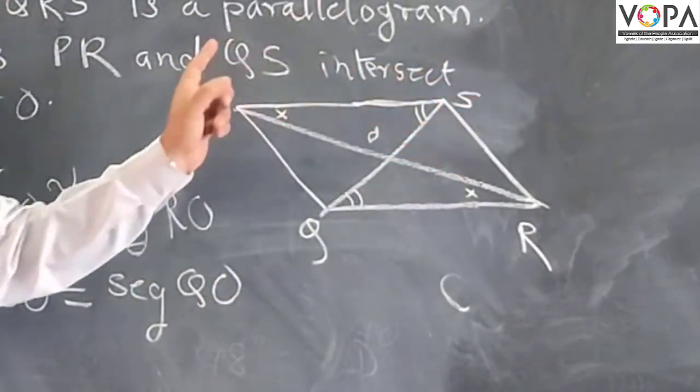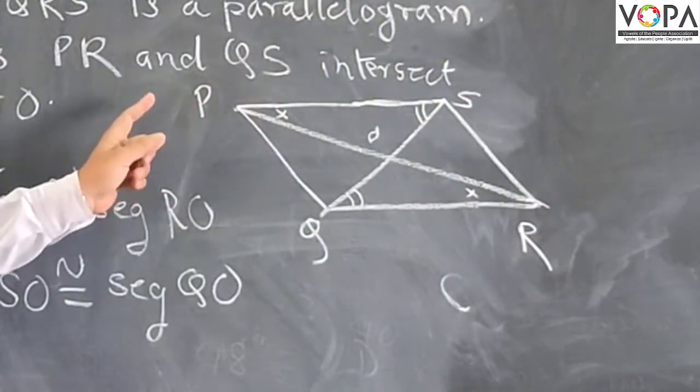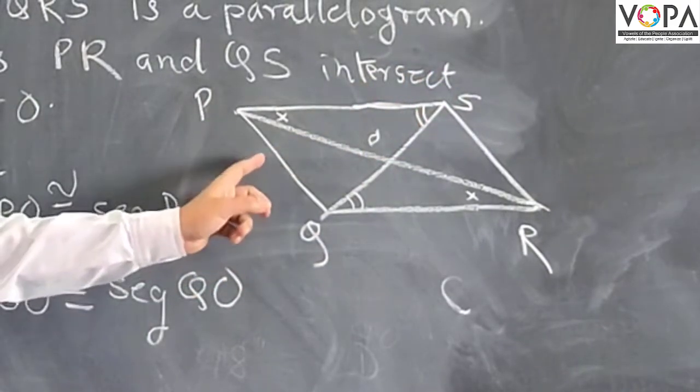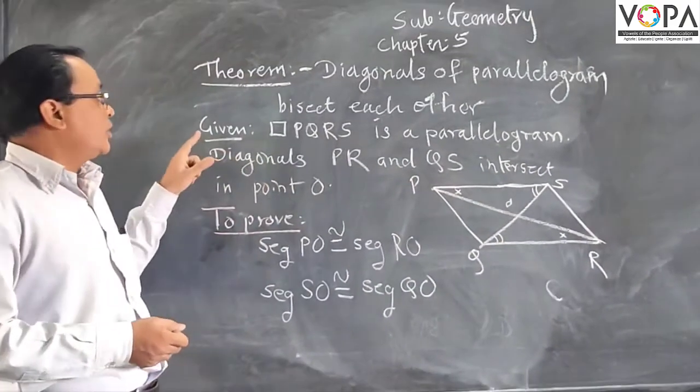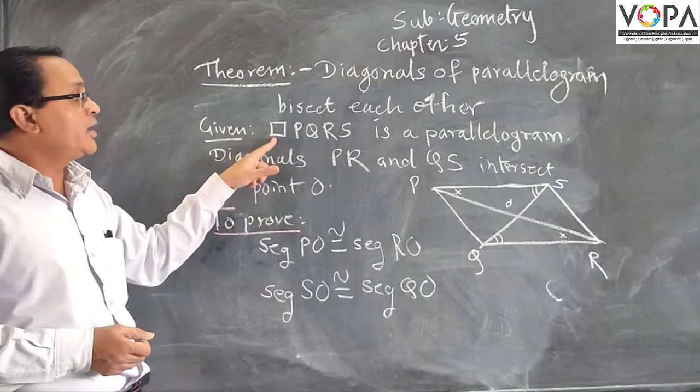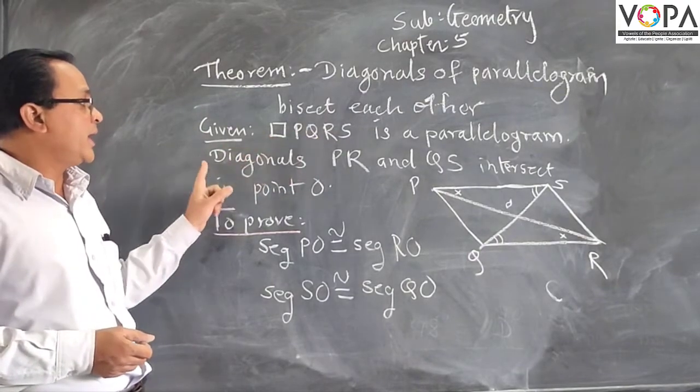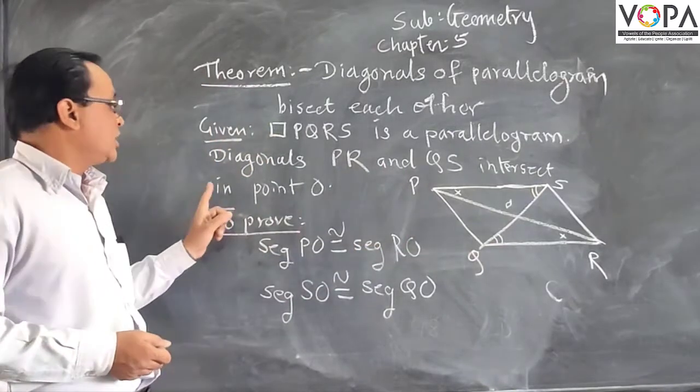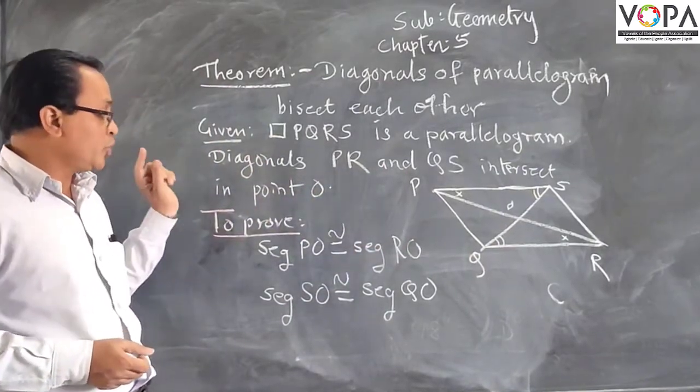PQRS is the parallelogram where PR and QS are the diagonals which are bisecting at point O. Let us write the theorem. Given: PQRS is a parallelogram. Diagonals PR and QS intersect each other at point O. What is the proof?